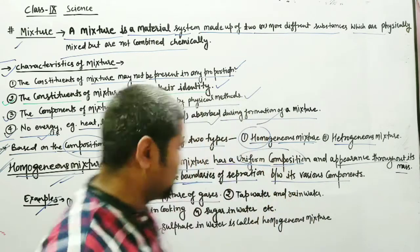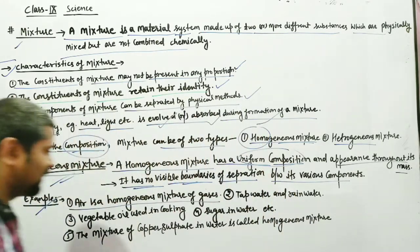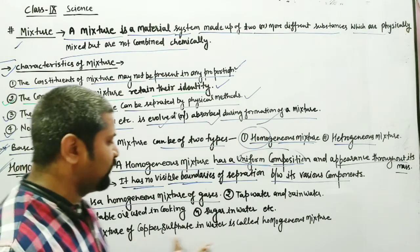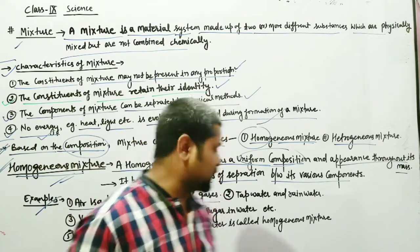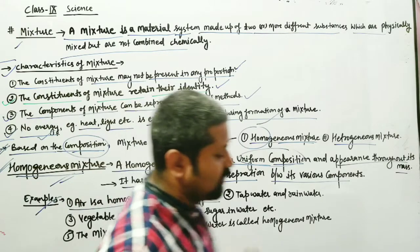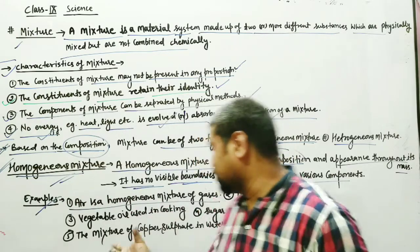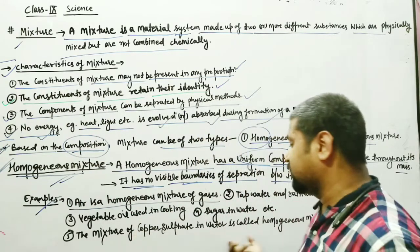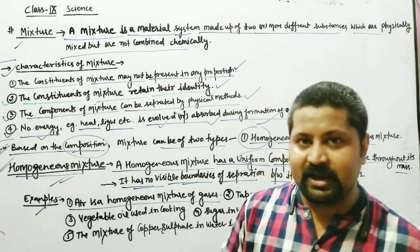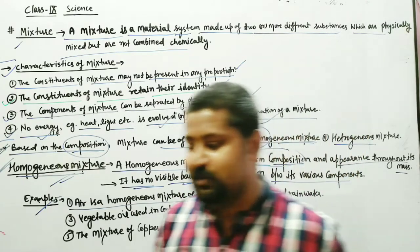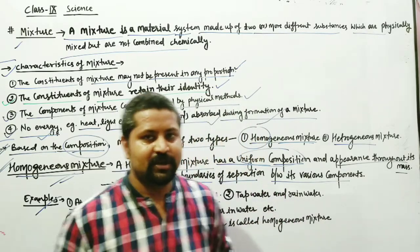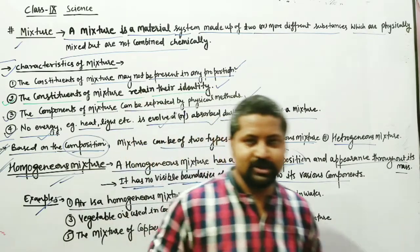Another example: the mixture of copper sulfate in water is a homogeneous mixture. This is an experiment you can observe — copper sulfate dissolves uniformly in water, forming a homogeneous mixture.